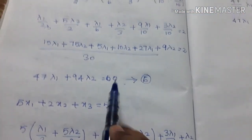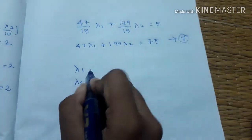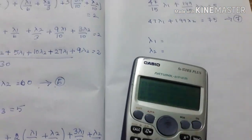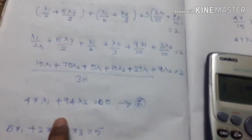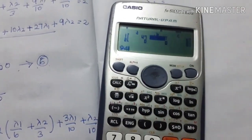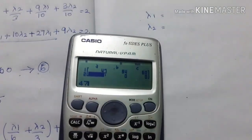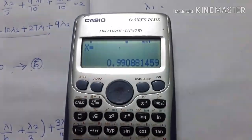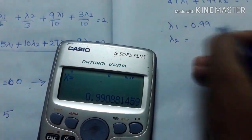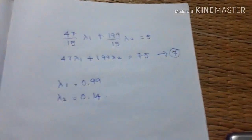Now we can solve using the sixth and seventh equations simultaneously. The coefficients are: equation one has 47 and 94 with constant 60; equation two has 47 and 199 with constant 75. Solving, lambda1 value is 0.99 and lambda2 value is 0.14.